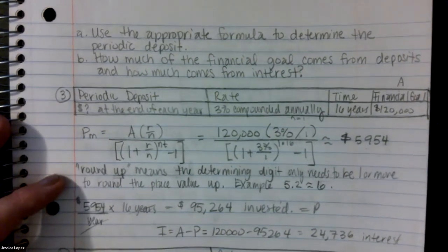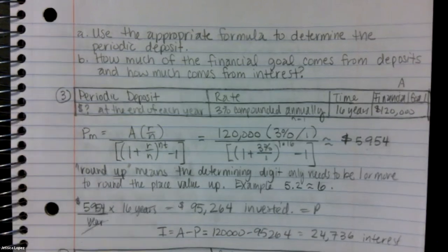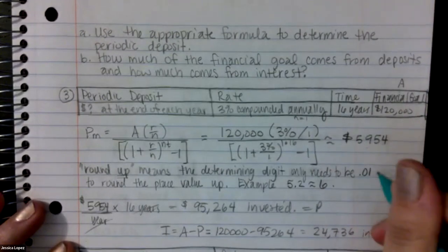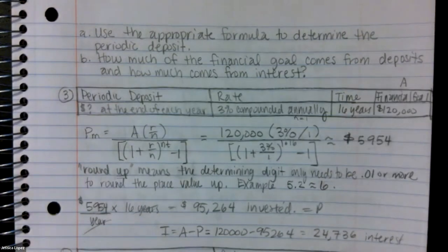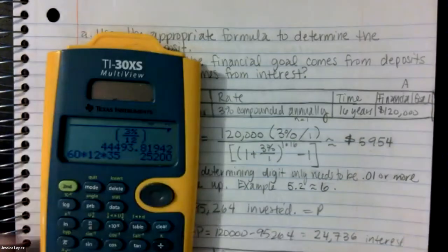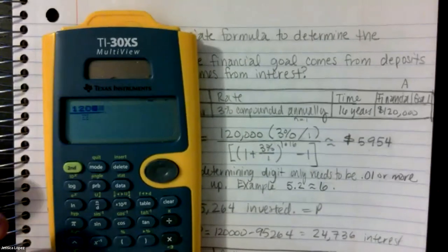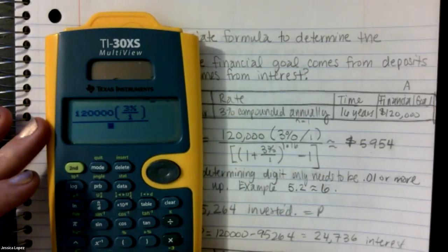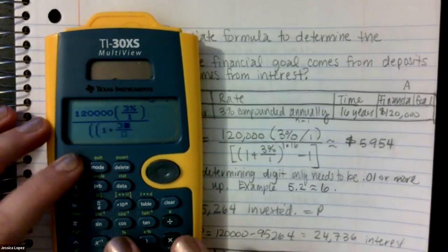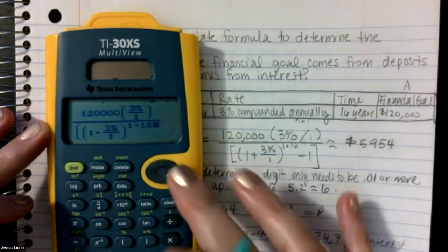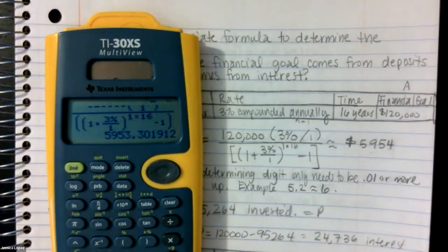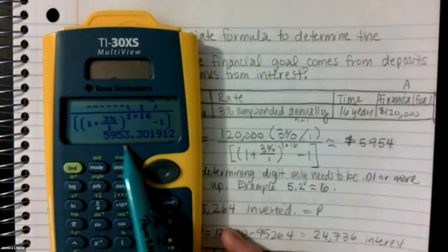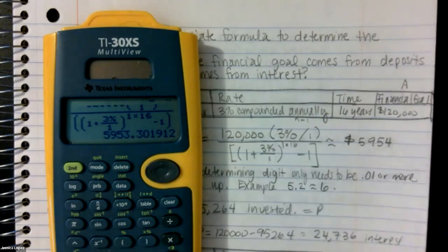The digit only needs to be 0.01 or more — if you have even just one cent, it's automatically going to go up to the next dollar. So let me type that in so you can see what it looks like. When I hit enter, you see the decimal result and I have to round up. So it doesn't matter what that decimal is — the fact that there is a decimal is why I have to round up to 5,954. That's why this is the result.